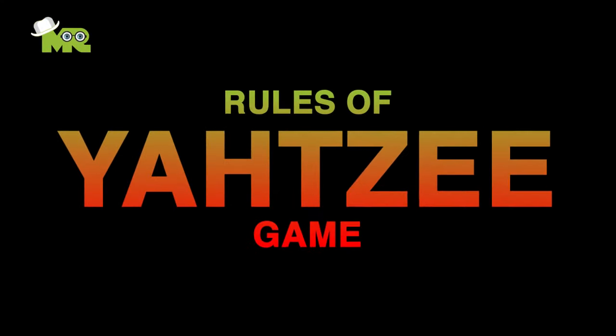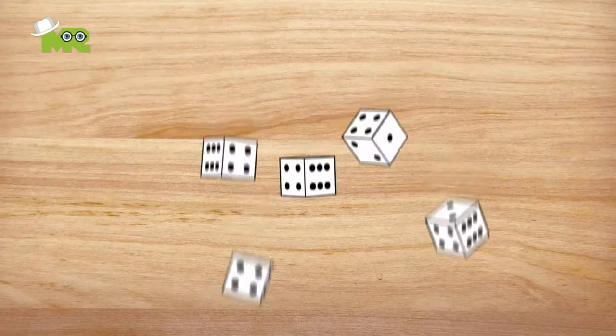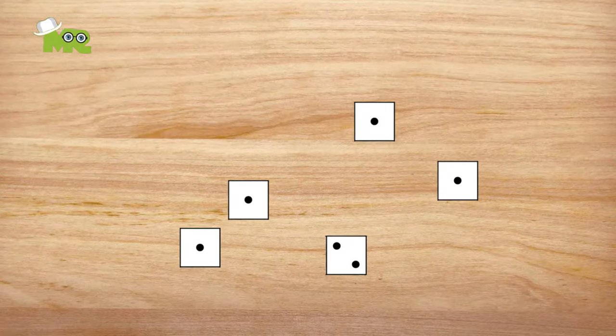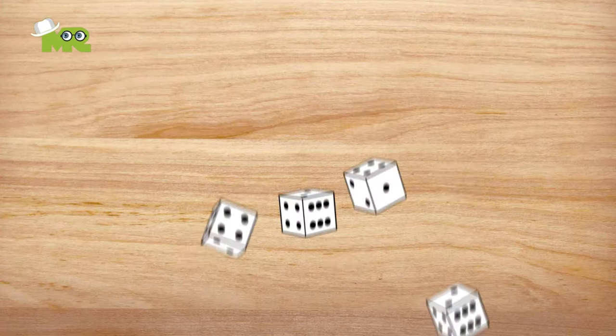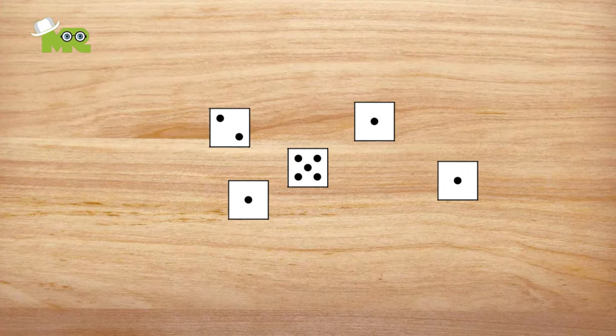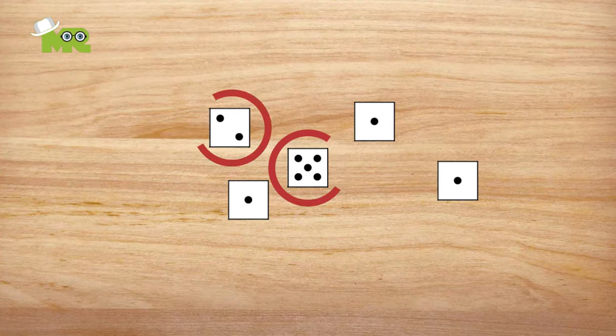Rules of the Yahtzee game. One: On their turn, every player is given three attempts to roll the dice. After the first attempt, the player gets a choice to decide which dice to keep from that roll, if any, and then move on to the next attempt.